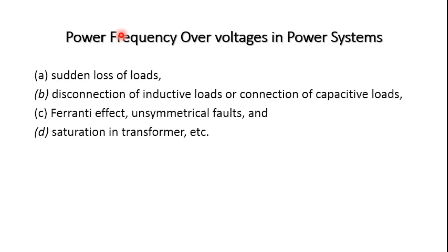Let us understand power frequency overvoltages in the power system. These occur at 50 and 60 Hz system frequency and are much more concerning in the case of EHV systems where the voltage is around 400 kV and above. The main causes for power frequency and harmonic overvoltages are given below — there are four key conditions.